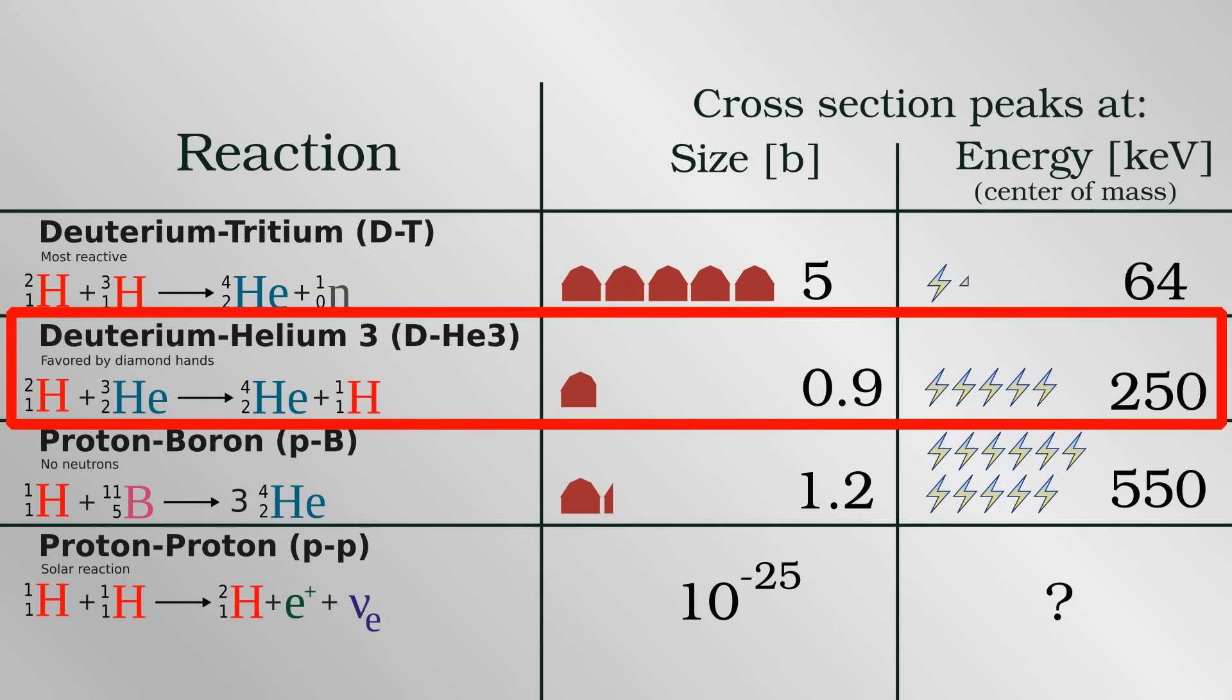The first challenge for Helion is that they plan on using the Deuterium-Helium-3 reaction. This is a much less reactive fuel mix than Deuterium-Tritium, which is the reaction in most other approaches.